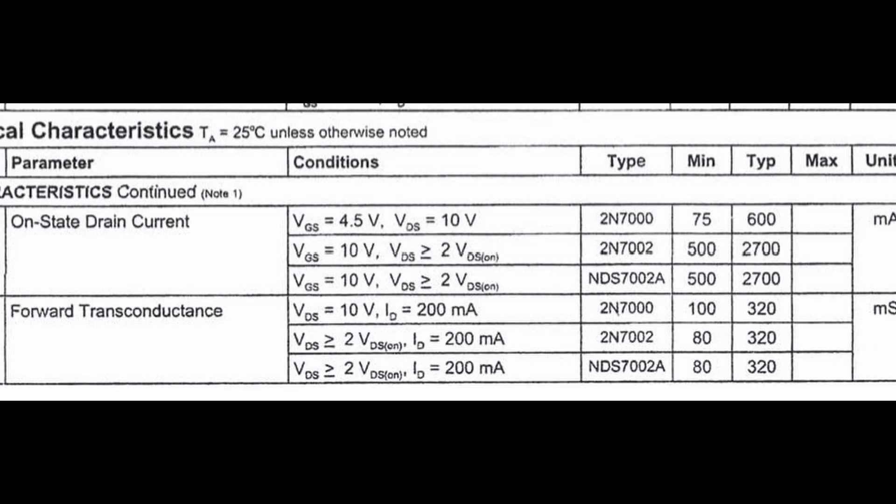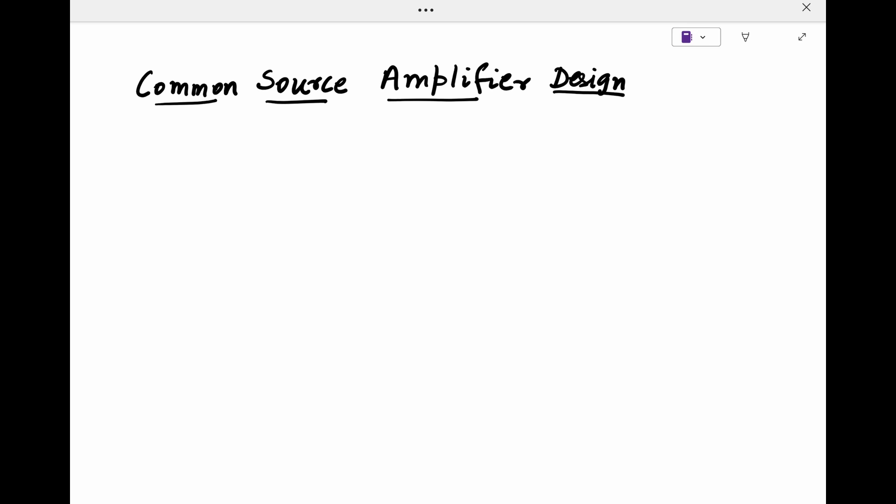For commercially available signal level MOSFETs, the device parameters in terms of oxide capacitance aspect ratio, as in length and width of the device, are not explicitly mentioned in the datasheet. Hence, we would need to calculate all the device parameters before designing a MOSFET-based amplifier.